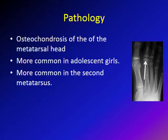Freiberg infraction is more common in the second metatarsal — most cases happen in the second metatarsal. However, some cases happen in the third metatarsal, and far less common is the fourth metatarsal.